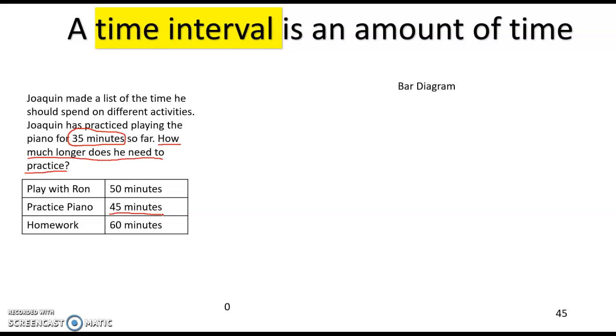One way I can do that is by drawing a bar diagram. So a bar diagram - the whole thing shows the total. We know that he's supposed to practice for 45 minutes. Now we know that he's got some time left. So far he's done 35.